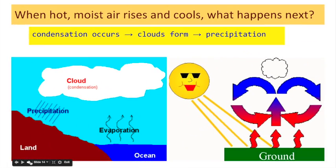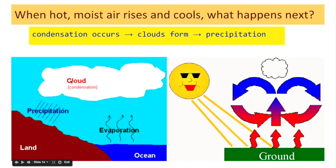When hot, moist air rises and cools, what happens next? Condensation occurs — clouds form and precipitation comes. When hot air rises, there is water vapor in that air. As it rises and cools, condensation takes place on condensation nuclei. When you get enough water droplets bumping into each other, they get heavy enough to break the force of the updrafts and start to fall back to the Earth as precipitation. The sun heats the ground through radiation, and convection transfers heat into the upper atmosphere, where it cools and sinks again — these are convection cells.